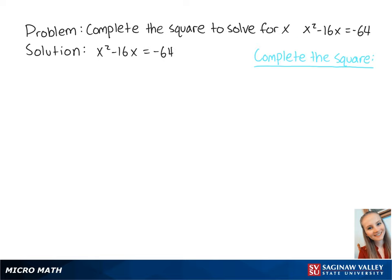To complete the square, we take the coefficient of x and multiply it by 1 half. So we get negative 16 times 1 half equals negative 8. Then we take negative 8 and we square it, which is equal to 64.